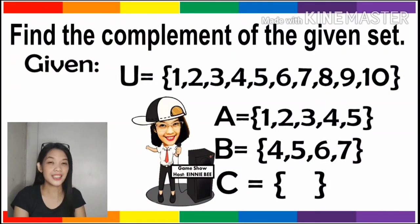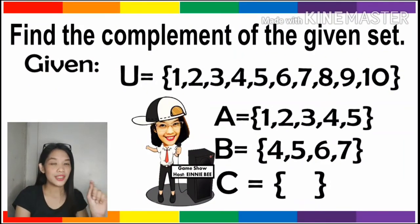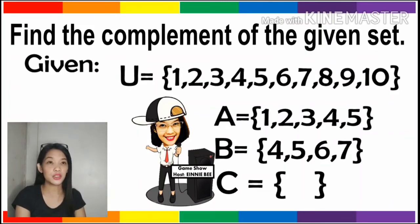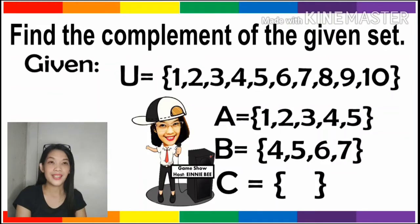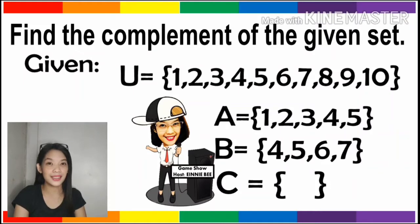Let us have specific examples. Find the complement of the given set. From the given, our universal set has the elements 1, 2, 3, 4, 5, 6, 7, 8, 9, and 10. Set A has the elements 1, 2, 3, 4, and 5. And set B has the elements 4, 5, 6, and 7. While set C is an empty set.